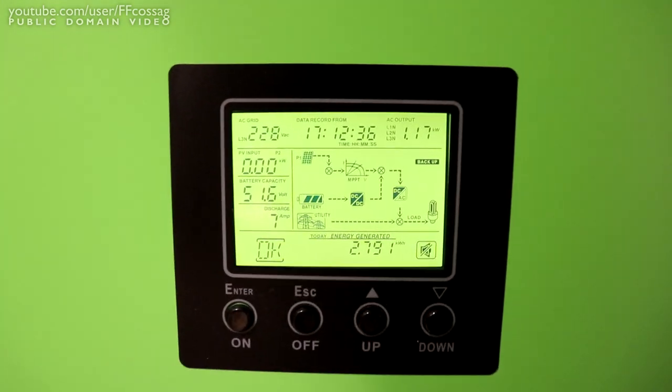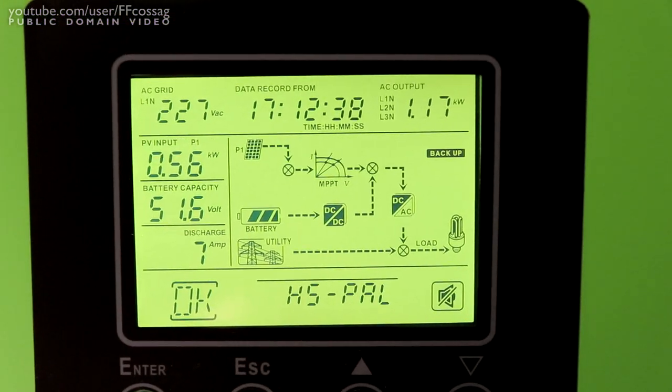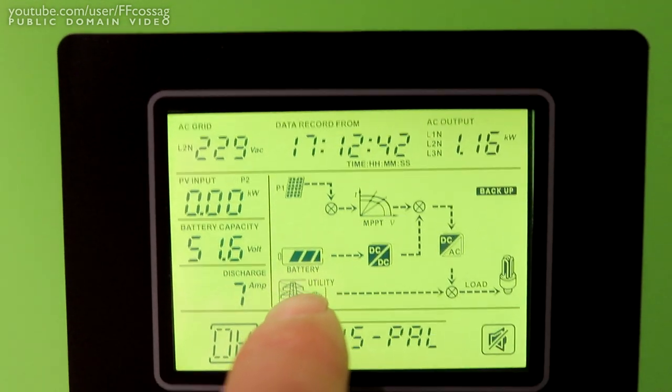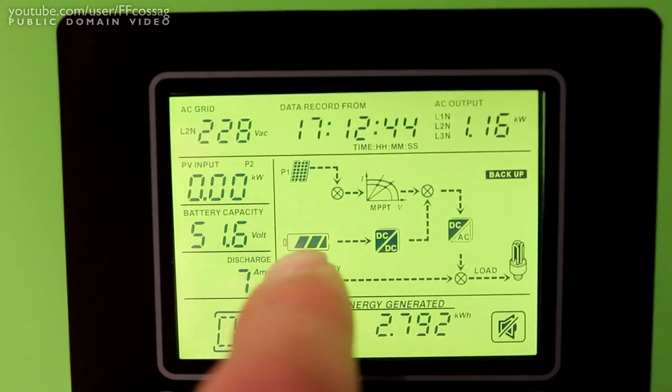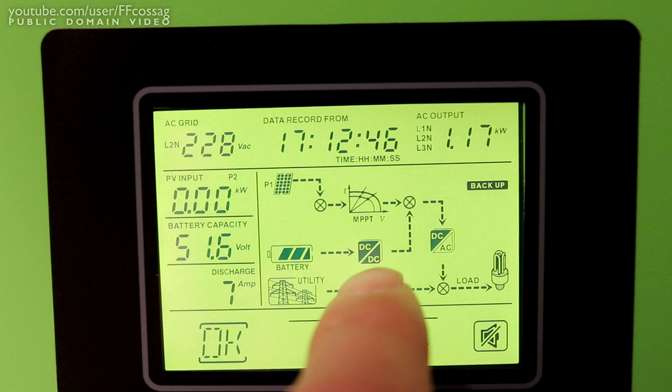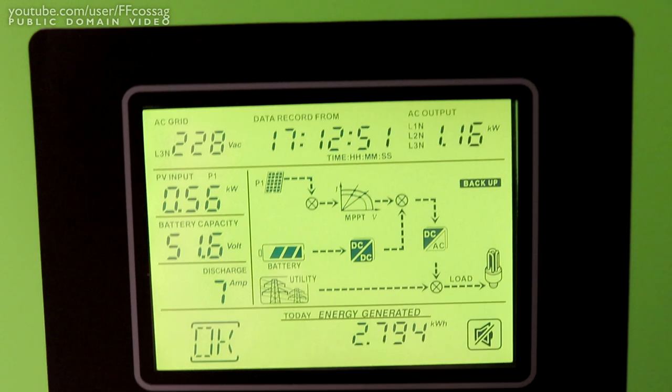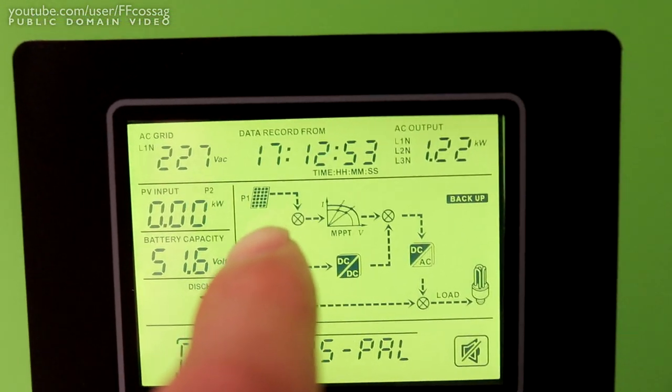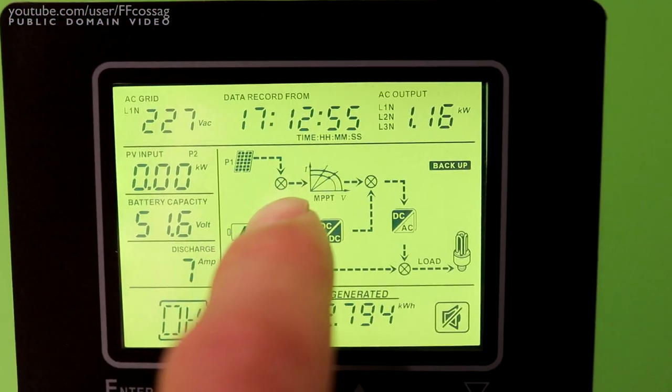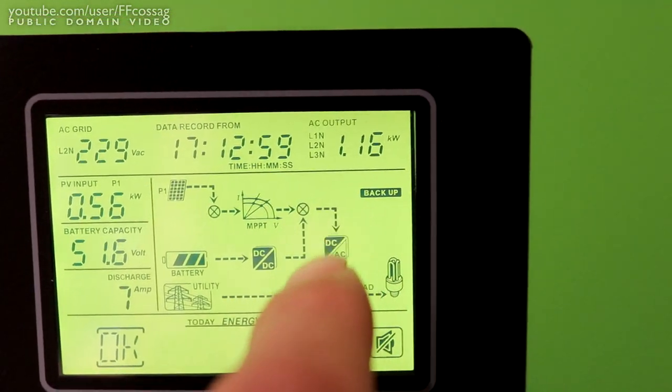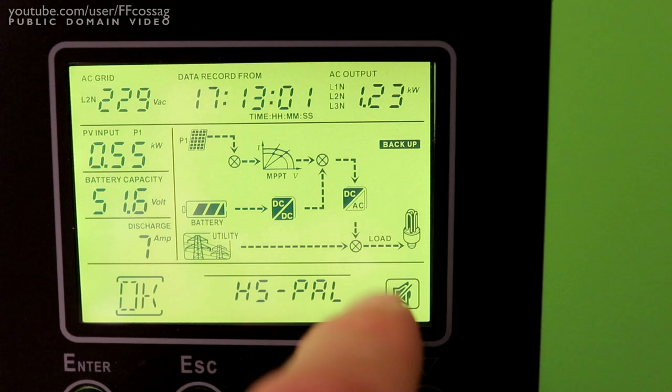And since we still have a little bit of sunlight left, you can see all our cute little symbols on the LCD there. So we've got battery, we've got utility, we've got battery DC-DC going into the switchover, going to the DC-AC, going to the power, powering the house, and we also have the photovoltaics, going to some switchover thing, going to the MPPT Tracker, going to another switchover, going to the DC-AC, going to the house.